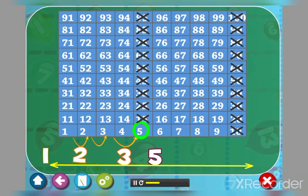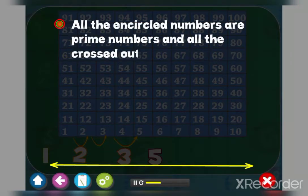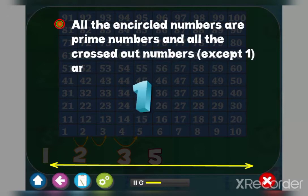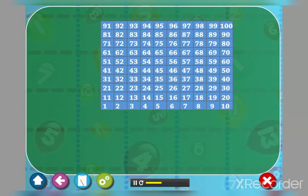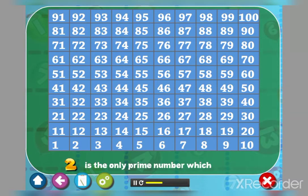All the encircled numbers are prime numbers and all the crossed out numbers except one are composite numbers. Children, did you notice that in this chart two is the only prime number which is even?